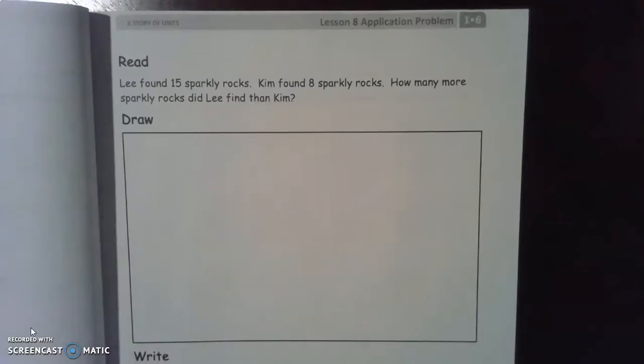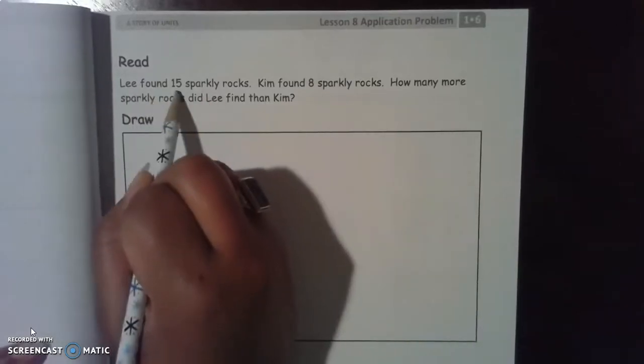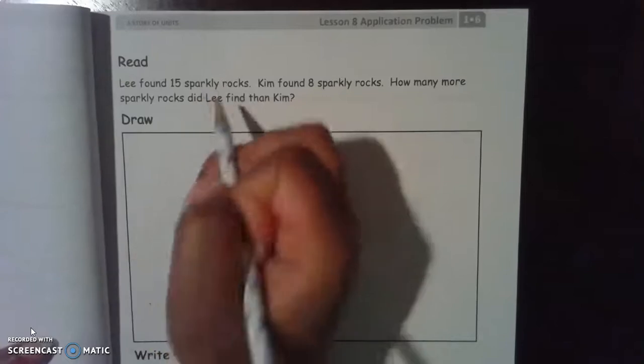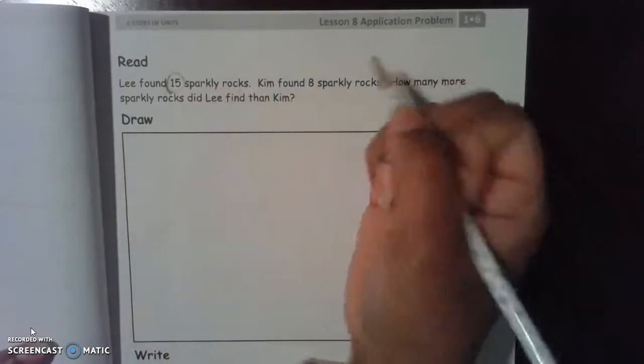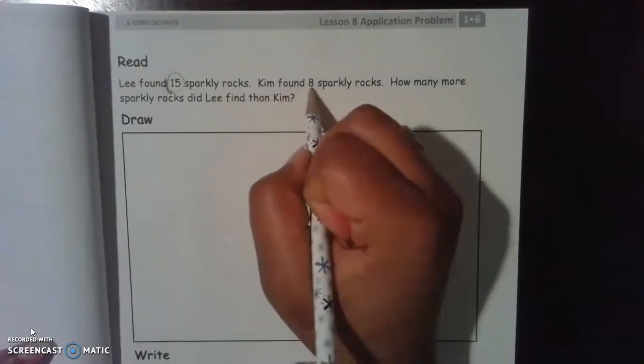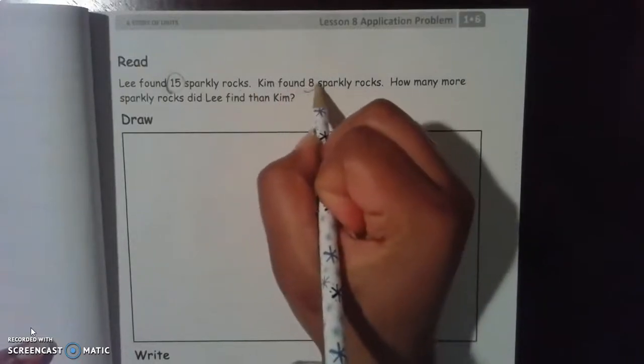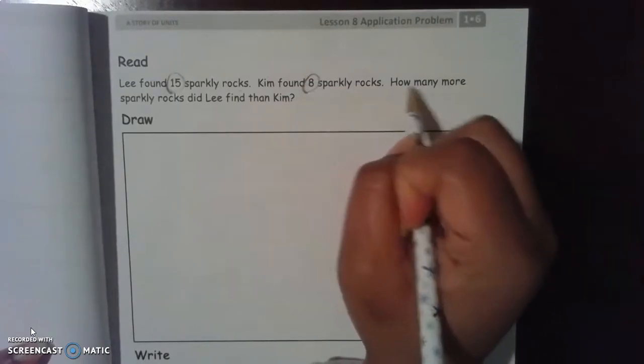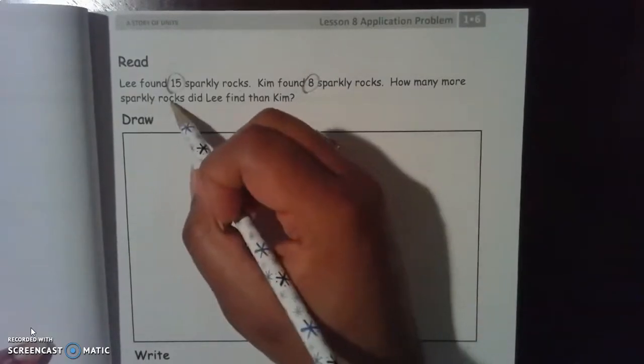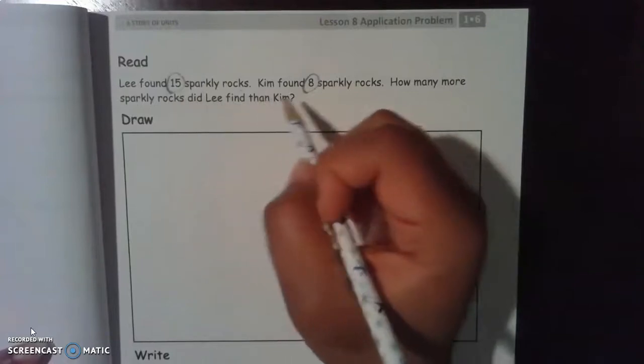Okay, go ahead and open your eyes and let's read together. Lee found 15 sparkly rocks. Let's circle 15 so we remember how many Lee found. Kim found 8 sparkly rocks. Let's circle 8 so we remember how many rocks Kim found. How many more sparkly rocks did Lee find than Kim?